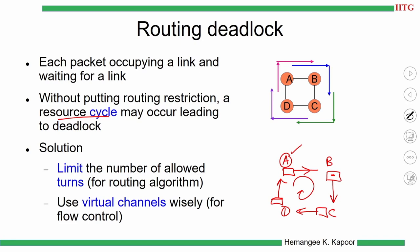A routing deadlock can happen in larger networks when many packets travel simultaneously. One solution is to limit the number of turns a packet is allowed to make, which can prevent cycles from forming. A second solution is to use virtual channels to avoid deadlock.